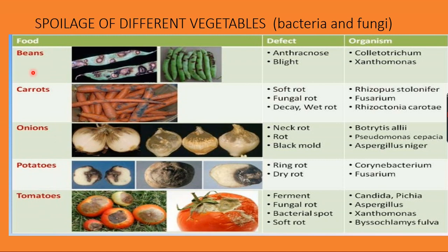Here is a review of vegetables and their defects. Beans develop black spots due to anthracnose caused by Colletotrichum, and blight disease from Xanthomonas. Carrots develop soft rot from Rhizopus stolonifer, fungal rot from Fusarium, and wet rot from Rhizoctonia carotae. Onions develop black mold from Aspergillus niger, neck rot from Botrytis allii, and rot from Pseudomonas cepacia.